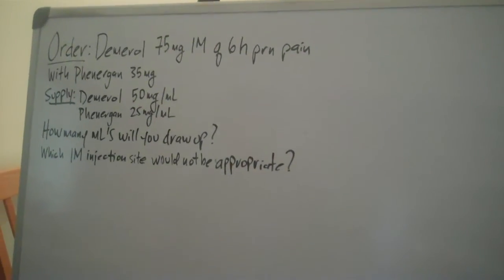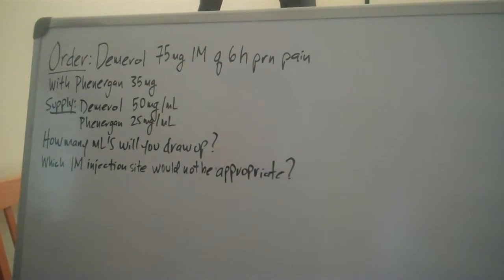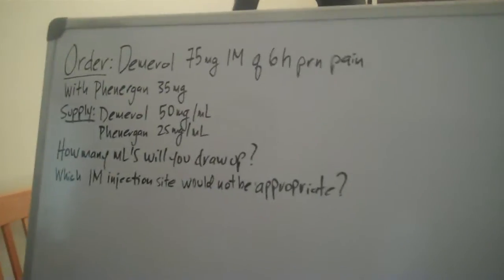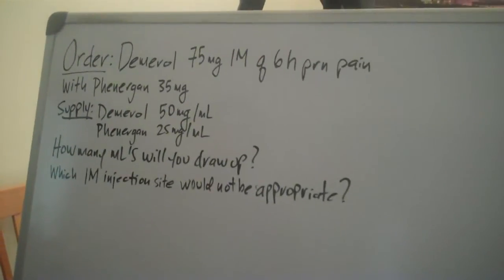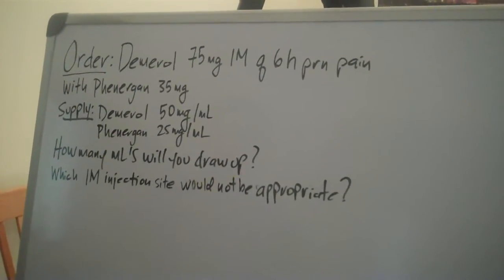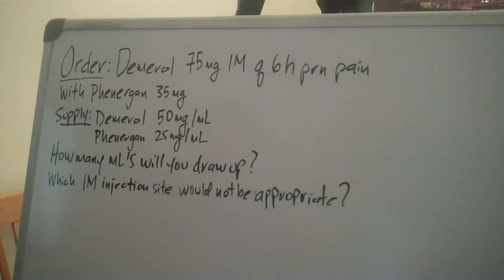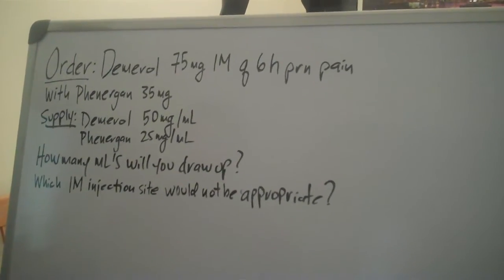Hi and welcome to MedMath for Nurses. Let's see what we got here. Our order: Demerol 75mg IM every 6 hours as needed for pain, along with Phenergan 35mg.